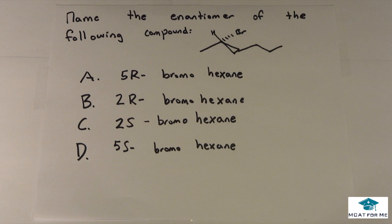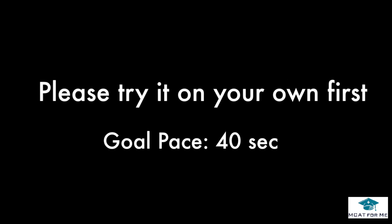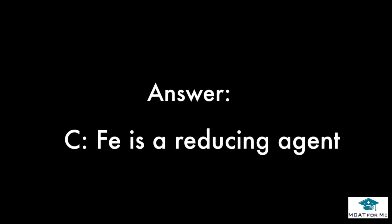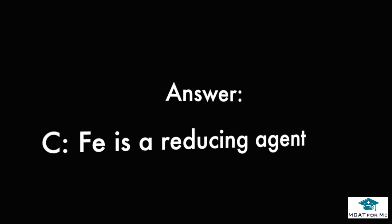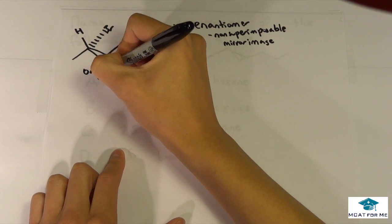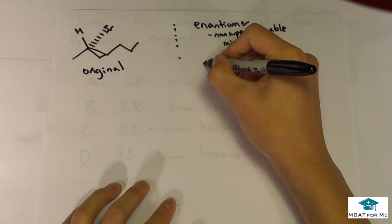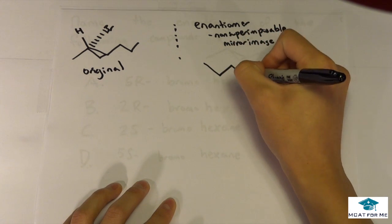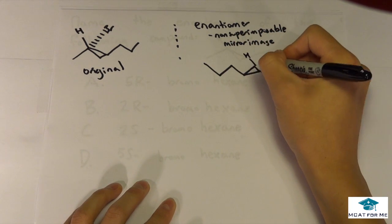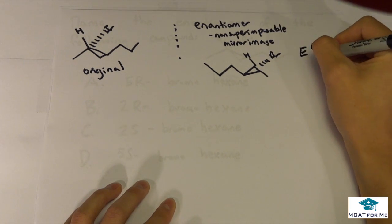Today we have an organic chemistry question asking us to name the enantiomer of the following compound. We have our molecule right here - this is our original. We know that the enantiomer is the non-superimposable mirror image. So we draw the mirror and get this molecule right here. This is the enantiomer and this is what we want to solve.